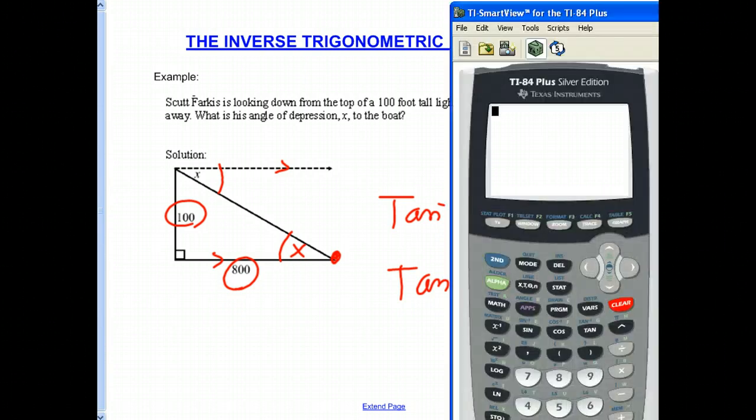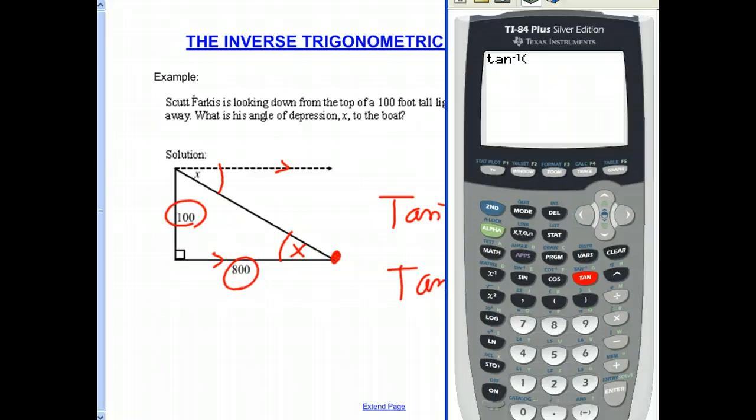And now we have to put that on our calculator to find the inverse tangent of 1 over 8. So let's do that. So we do the inverse tangent of 1 divided by 8. So let's do 1 divided by 8. And we hit the Enter key. And notice we get an answer of 7.125 degrees. So the answer is 7.125 degrees.